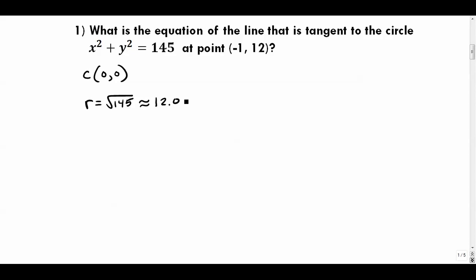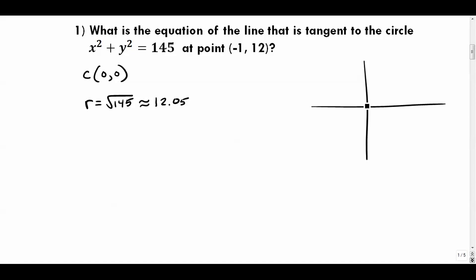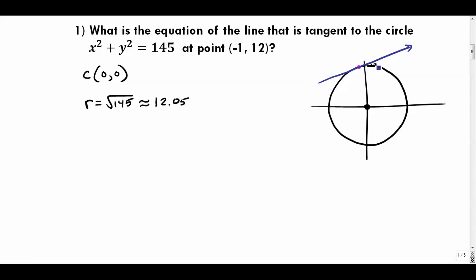The radius is approximately 12.05. Graphing this, the circle is centered at (0, 0) with a radius of about 12. The point of tangency is (-1, 12), which sits right on the circle. I need to find the equation of the tangent line through that point.